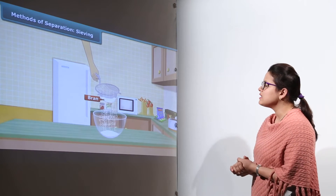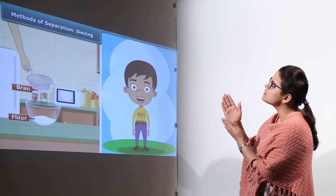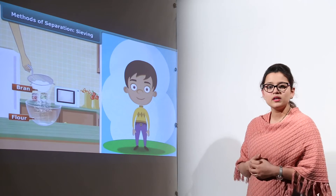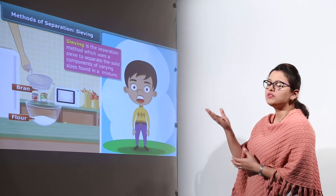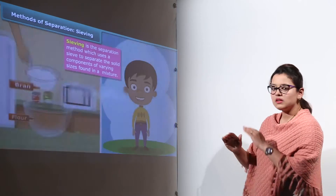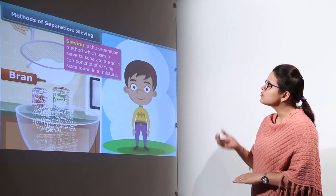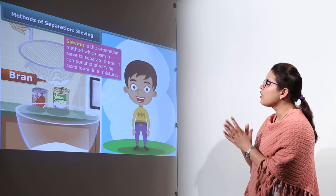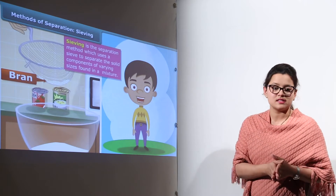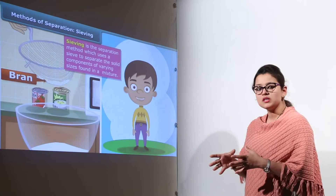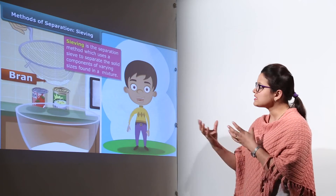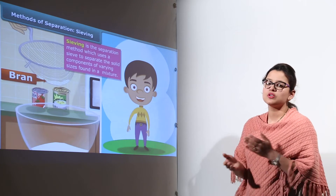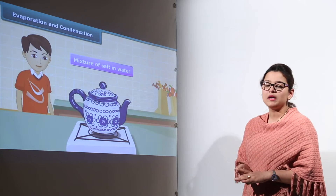The next process is sieving. We have all seen in our homes how coarse bran is separated from fine flour — our mothers used to do it. This is done with the help of a sieve, a net-like structure. Sieving is the separation method which uses a sieve to separate solid components of varying sizes from a mixture, depending on their sizes.